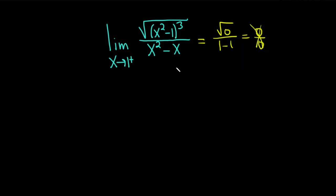So we're going to take a different approach. Let's carefully work through this solution. Right away, you can see there's a lot of factoring that can be done. In the numerator, x squared minus 1 is the difference of squares, and in the denominator we can pull out an x. So let's go ahead and do all of that.